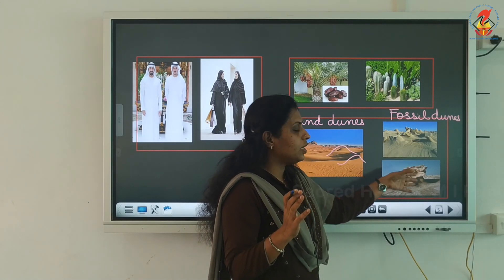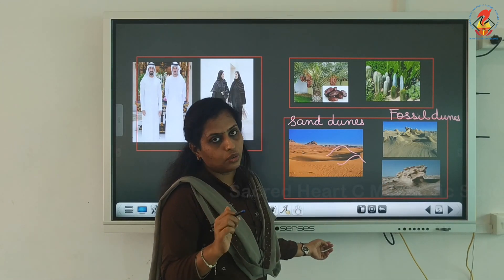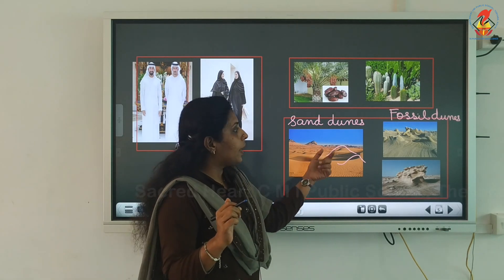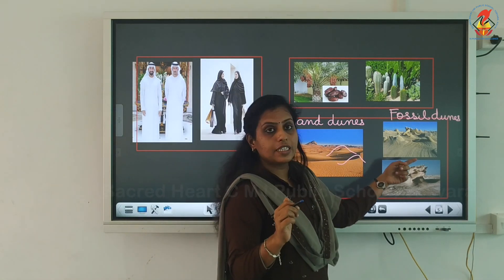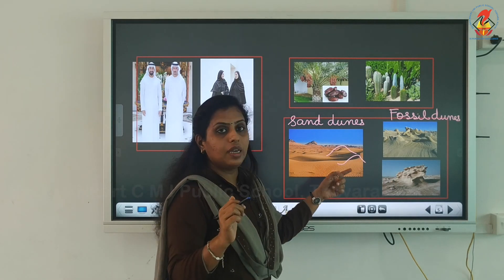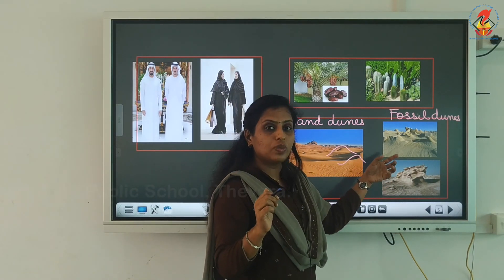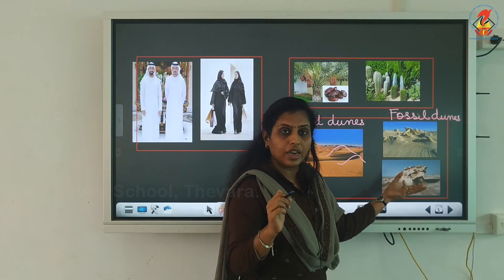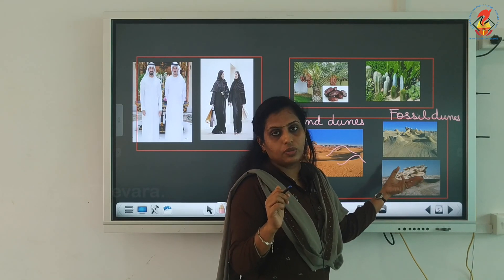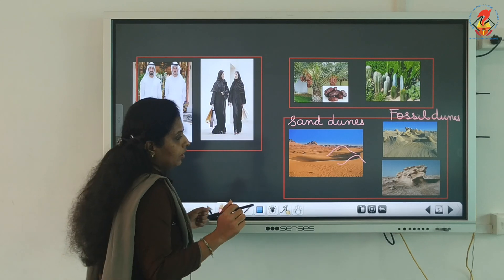It takes time to form fossil dunes. One kind is the regular sand dune; the other kind is the fossil dune. These are maintained by the government, but they are very fragile — they will crack and collapse easily.